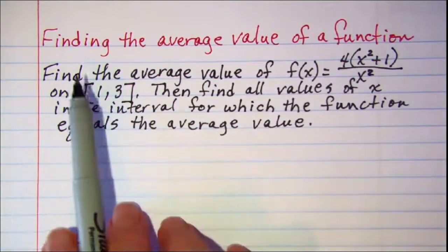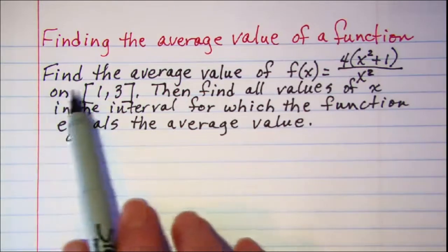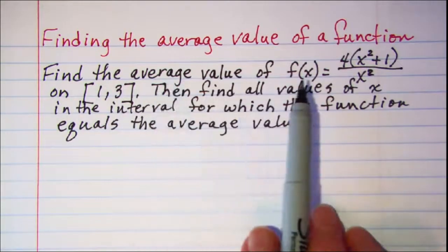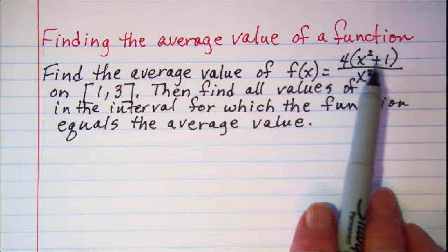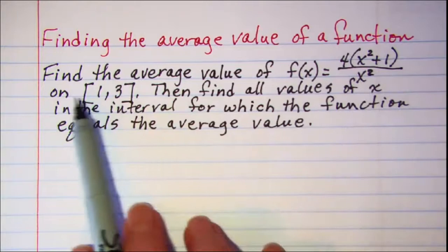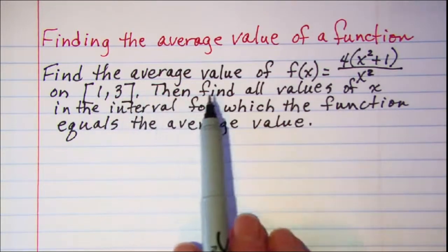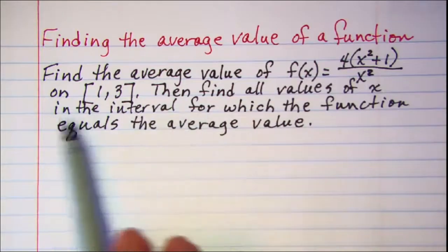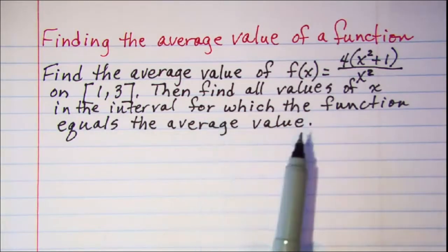In this video we'll be finding the average value of a function. Our problem is to find the average value of f of x equals 4 times the quantity x squared plus 1 all divided by x squared on the closed interval from 1 to 3. Then we're asked to find all values of x in that interval for which the function equals the average value.